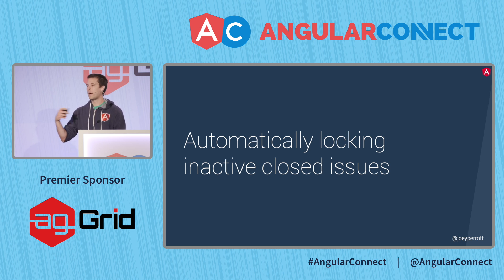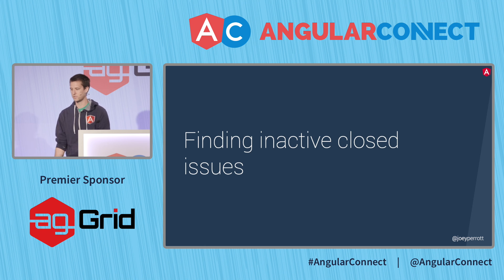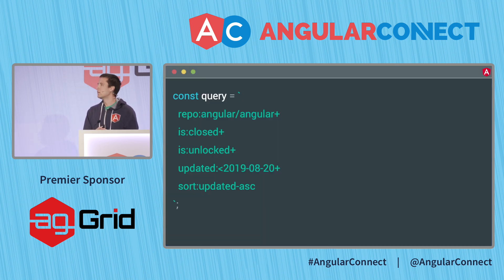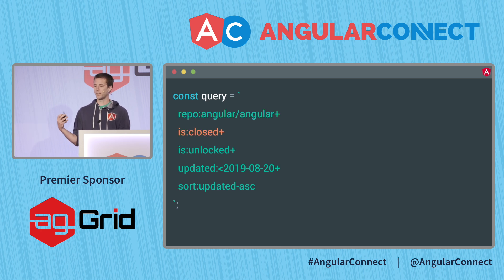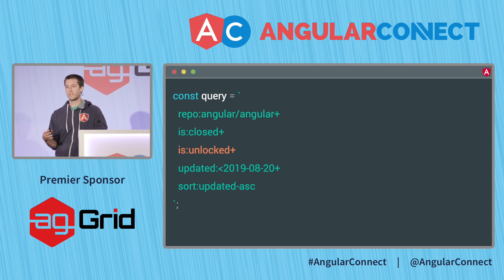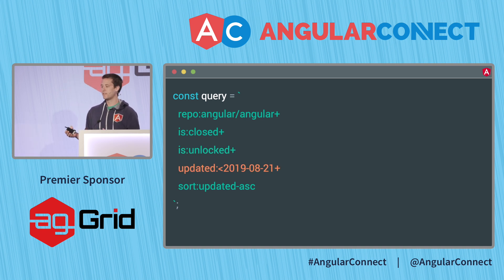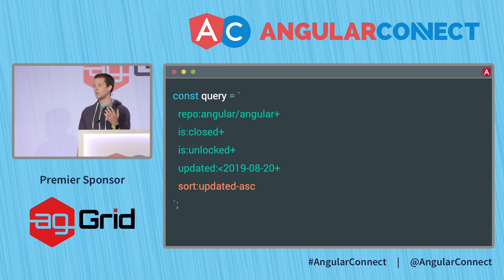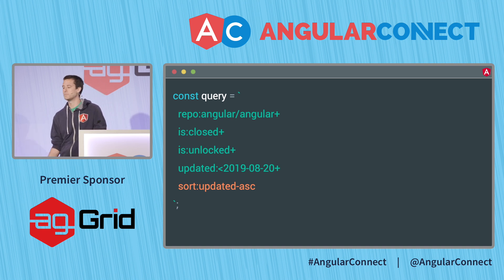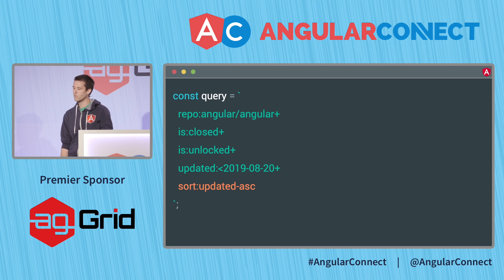I'm going to walk through how our GitHub Action works. To find inactive closed issues, we use GitHub's API — the same syntax as regular UI queries. We check the repository we want to look in, in this case angular/angular. We only look at closed issues and only unlocked issues, because trying to lock a locked issue does nothing. We look for things updated 30 days or more ago — for today that would mean August 21st. And we sort so that the oldest-updated issues come first, so if we have more issues than we can lock at once, we start from the oldest and work our way back.